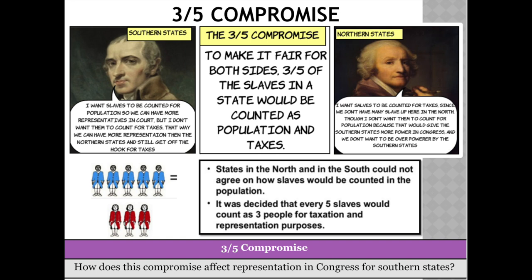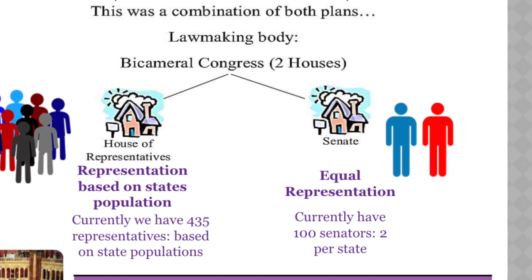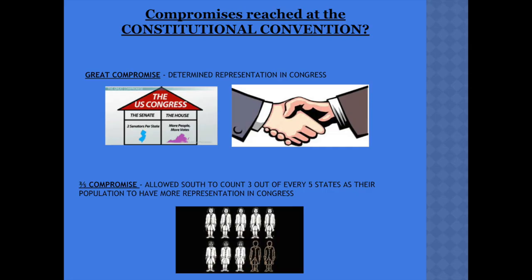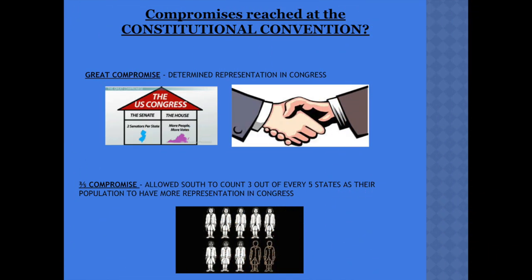How does this compromise affect representation in Congress for the southern states? Think about it — if you have more people, you have more representatives. And if the south is able to count their slaves, then they're going to have more representatives in Congress, which means more influence because they'll have more votes. To recap, two compromises were reached at the Constitutional Convention in the summer of 1787: the Great Compromise, which determined representation in Congress by dividing it into two — one with equal representation and one with proportional representation — and the three-fifths compromise, which allowed the south to count three out of every five slaves as population to have more representation in Congress.